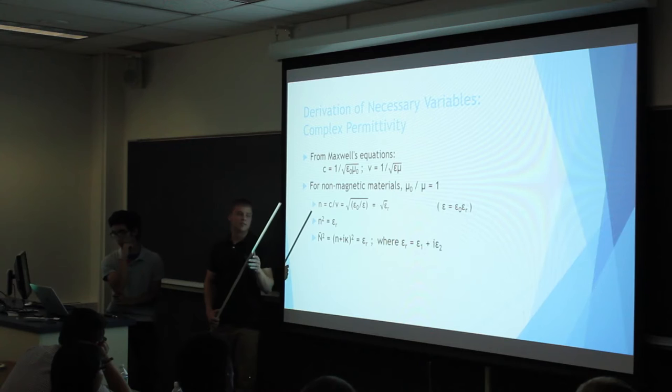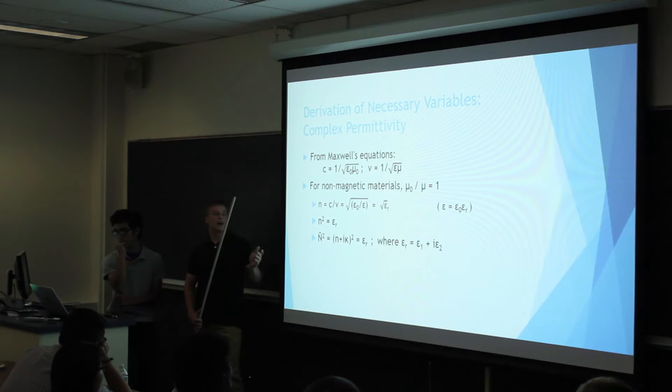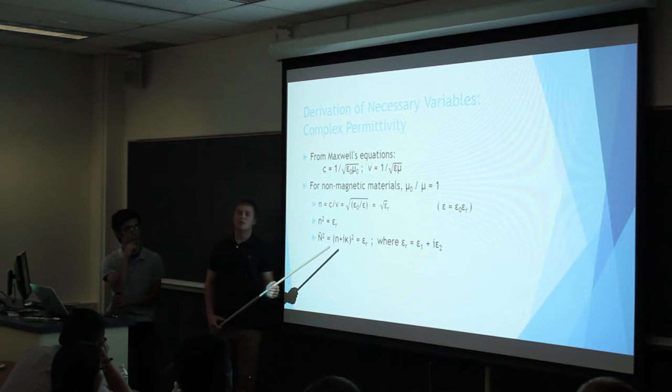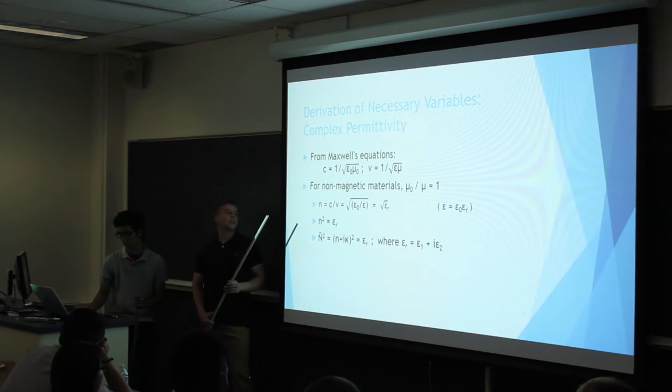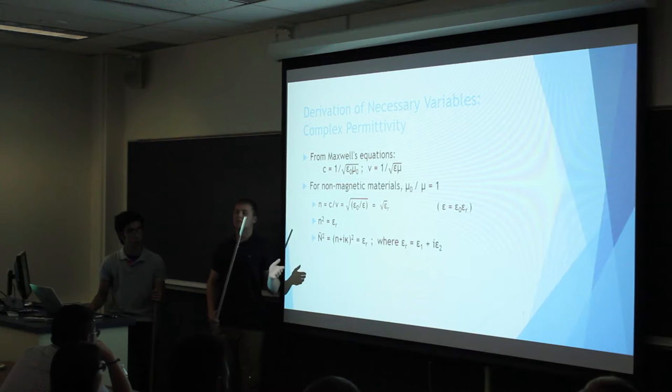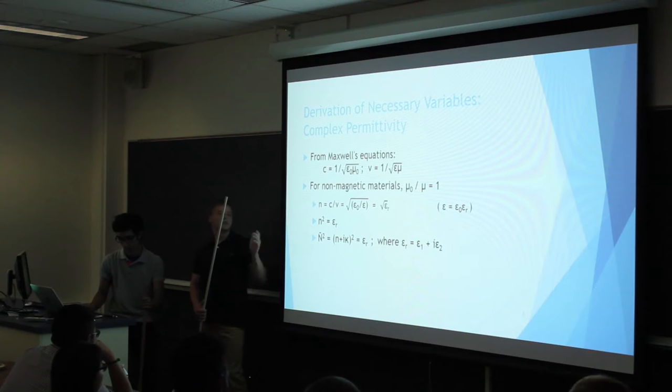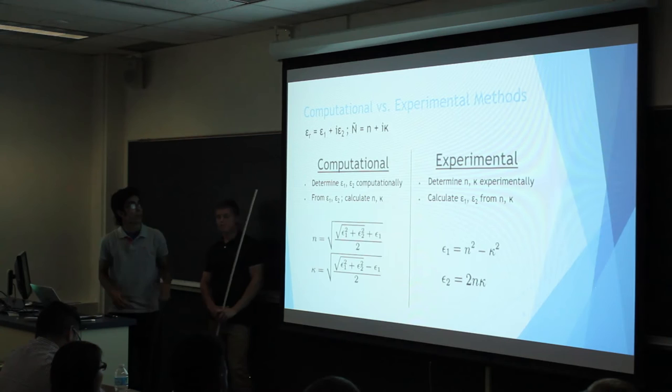We end up with n squared equals epsilon r, and it's important to note that epsilon r is dimensionless since it's a ratio. By substituting in that complex refractive index, we end up with the equation n plus i*kappa squared equals epsilon r. Since we have a complex refractive index on one side, we know we actually have to have a complex permittivity also. So epsilon r becomes epsilon 1 plus i*epsilon 2. That's how we end up with the relationship between the complex refractive index and the complex permittivity.